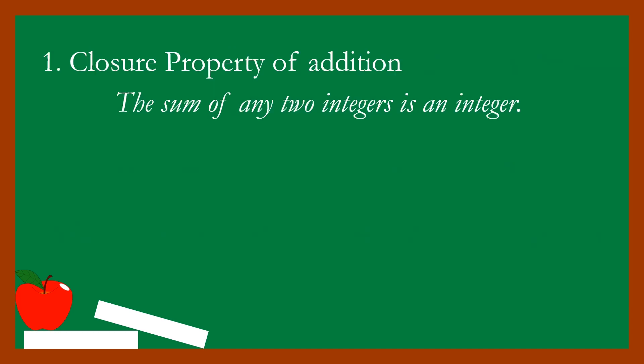Property number one is the closure property of addition: the sum of any two integers is an integer. For example, three plus four is equal to seven. When we add two integers like three and four, the result is also an integer.